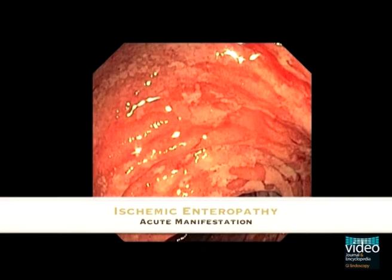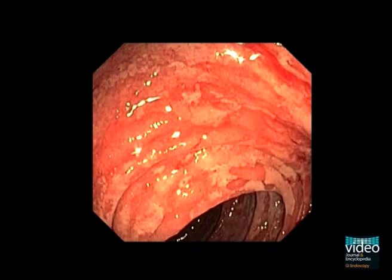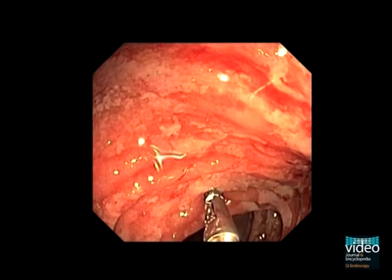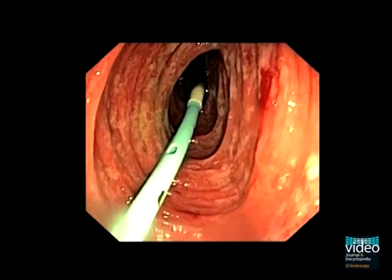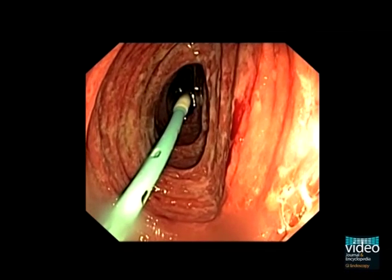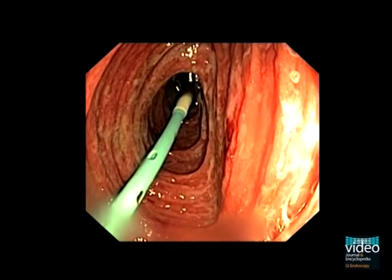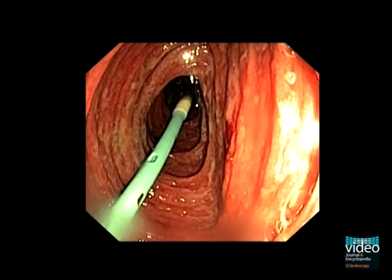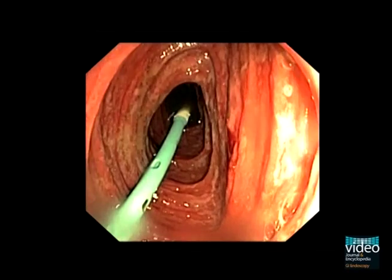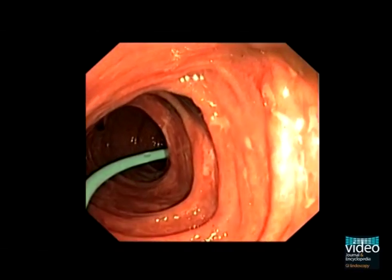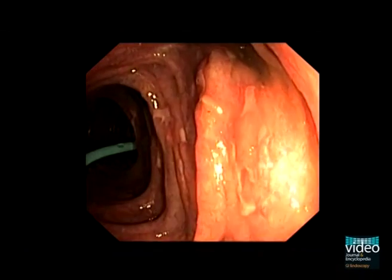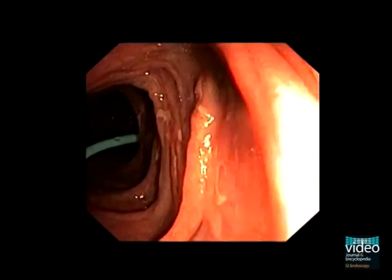Acute intestinal ischemia can be visualized endoscopically as segmental ulceration. In this case of non-occlusive ischemia in a young patient, superficial ulceration is seen in the distal duodenum and jejunum. The mucosa still looks vital as there is no bluish congestion in this segment. However, the lumen is distended and without peristalsis. Therefore, a transnasal decompression tube has been advanced endoscopically.